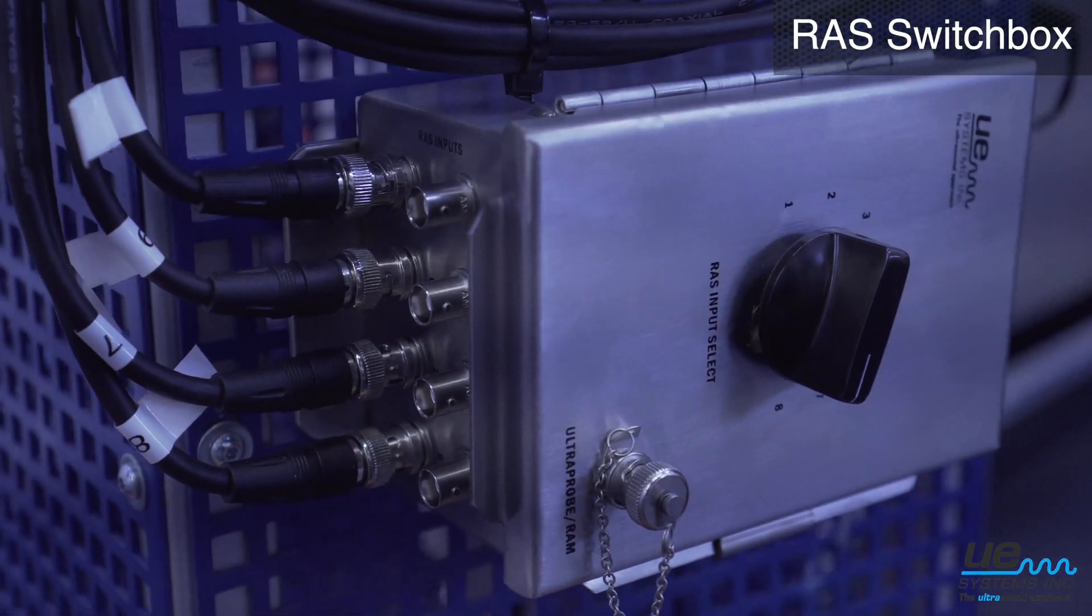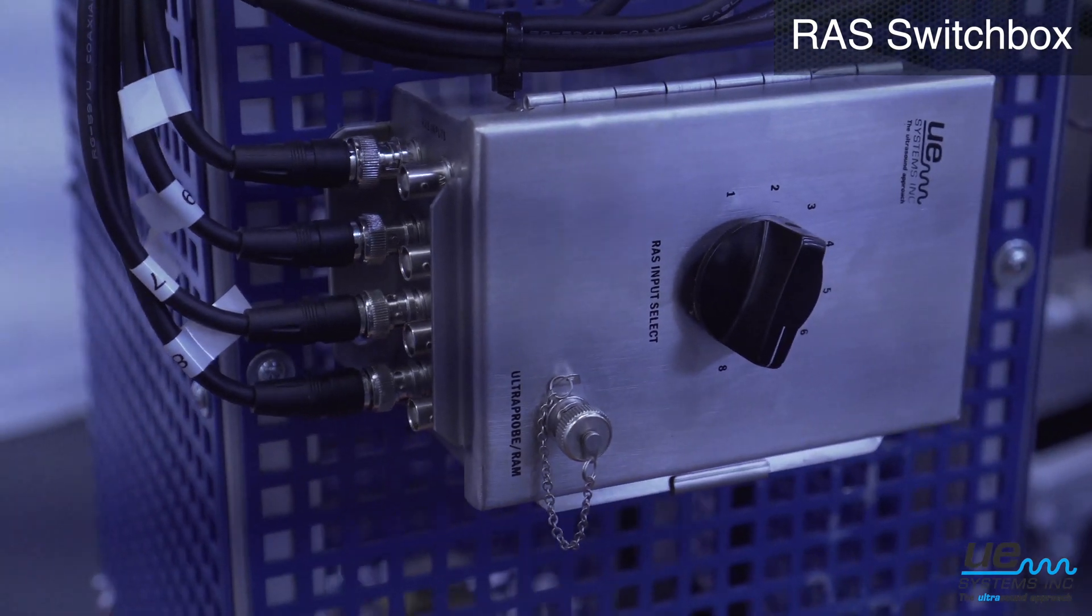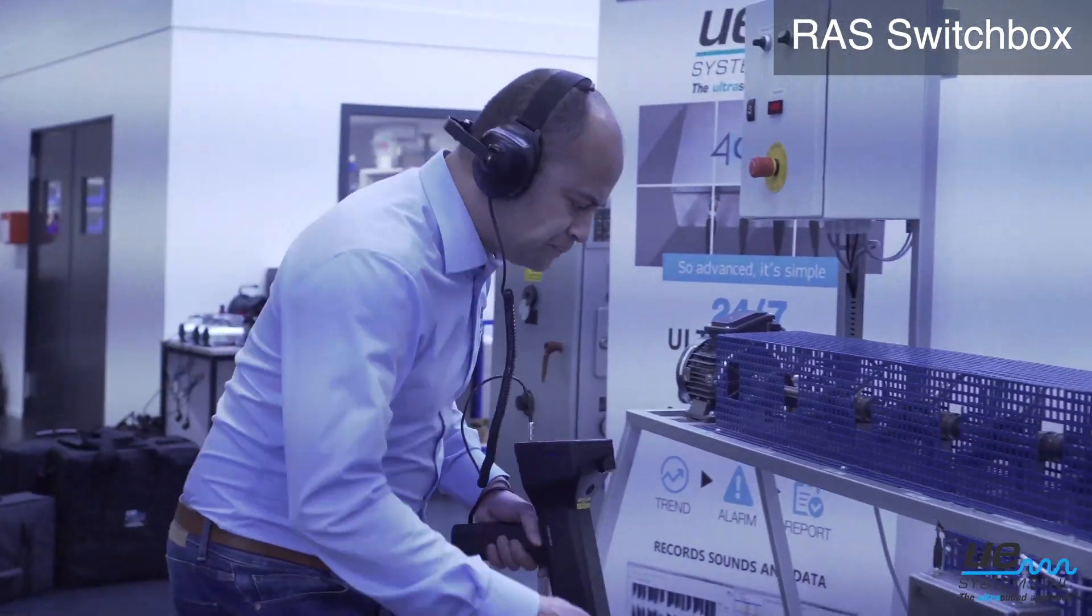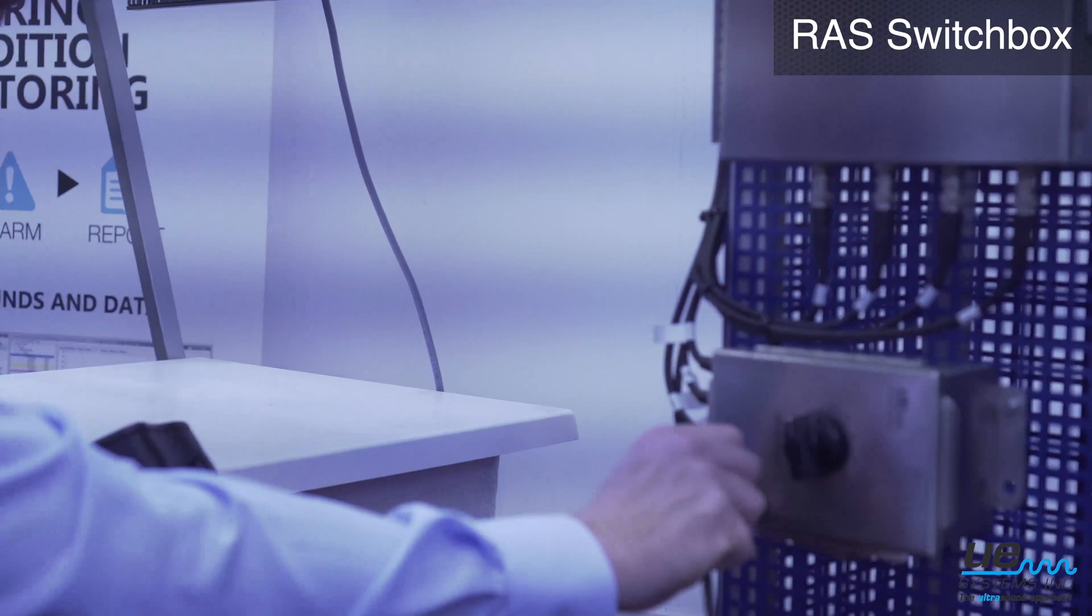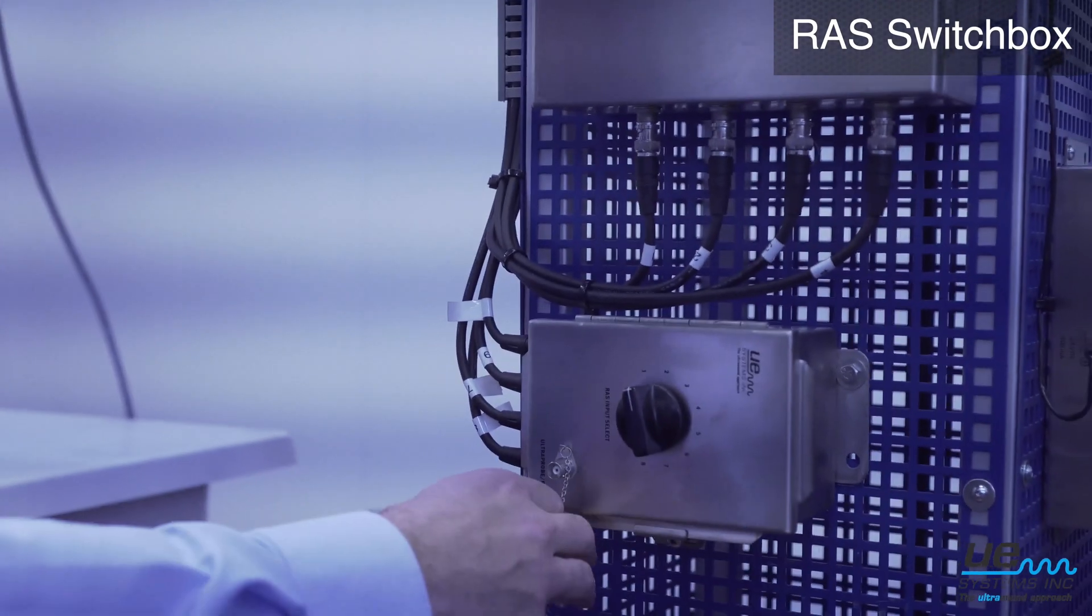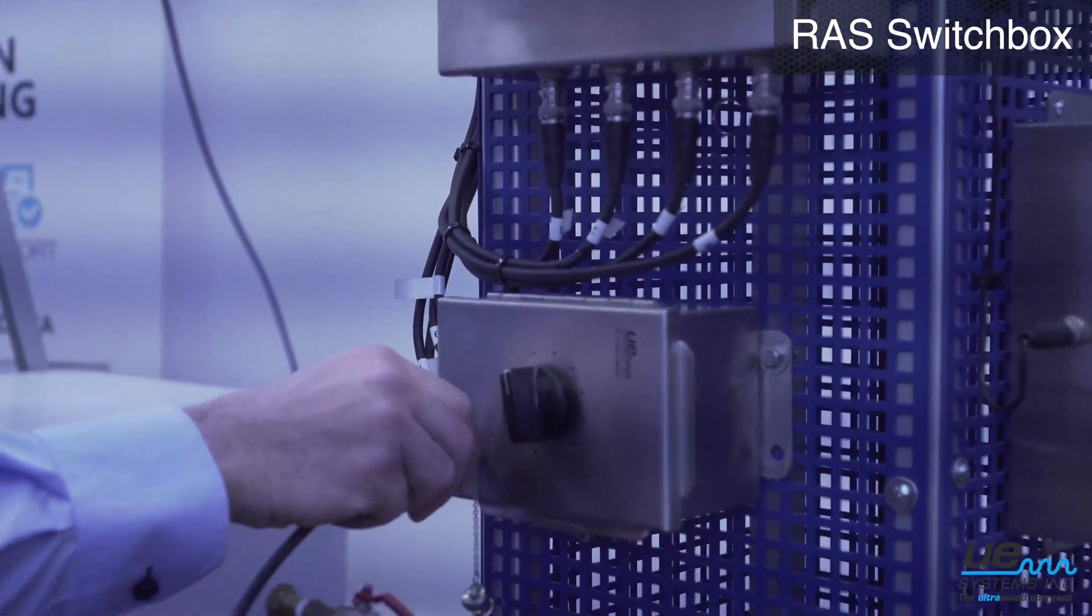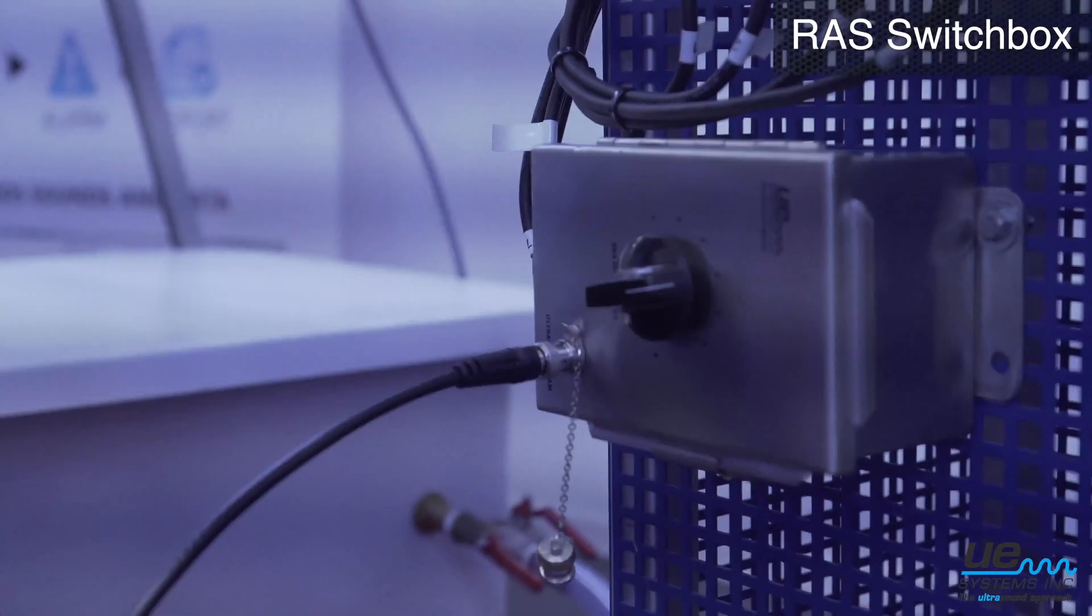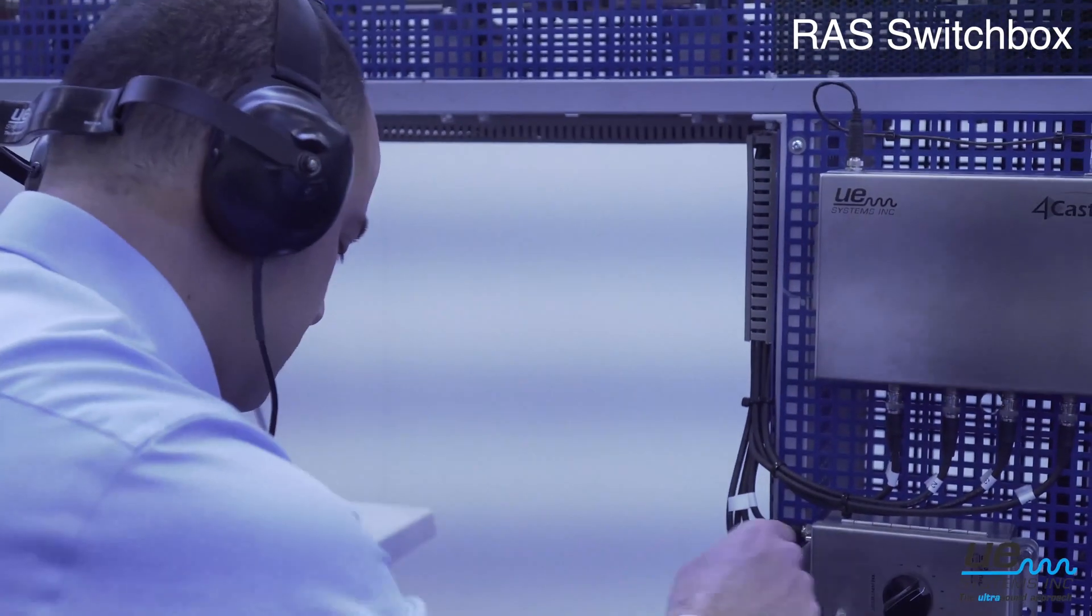You can also use a switch box connected to eight remote access sensors for a quick inspection. Simply connect the sensors to the switch box and then plug in your Ultra Probe. Use the dial to quickly move through the different test points and collect your data.